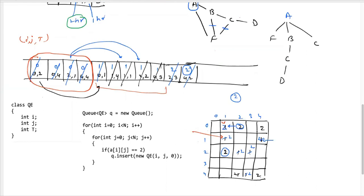Before returning the max time, traverse the matrix again to check if any fresh orange remains. If there exists any cell with value 1 after BFS completes, that orange will never rot, so return -1. Otherwise, return the maximum time recorded.